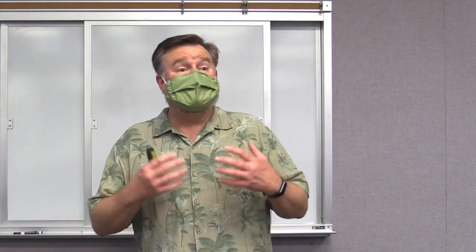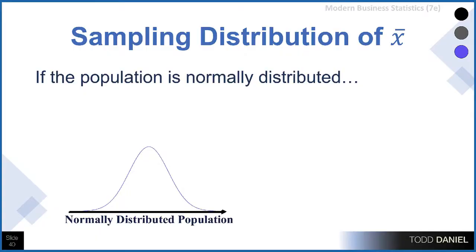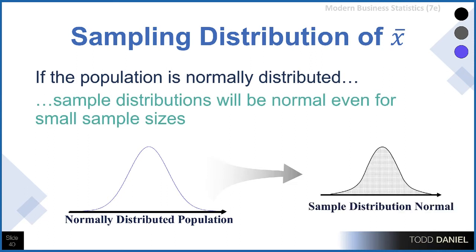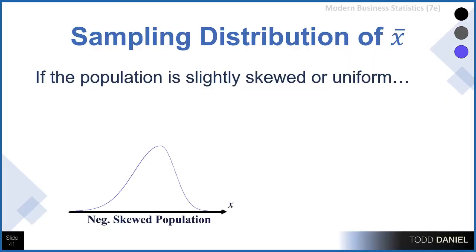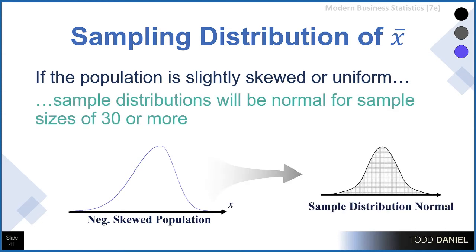However, sample size will be important. If the population is normally distributed, sample distributions will be normal even with small sample sizes. If you're pulling from a normally distributed population using sample sizes of 15, you'll still get a normal distribution of sample means. However, once the original distribution becomes more skewed, we need more cases to approach normality more quickly. Sample distributions will be normal with sizes of 30 or more.